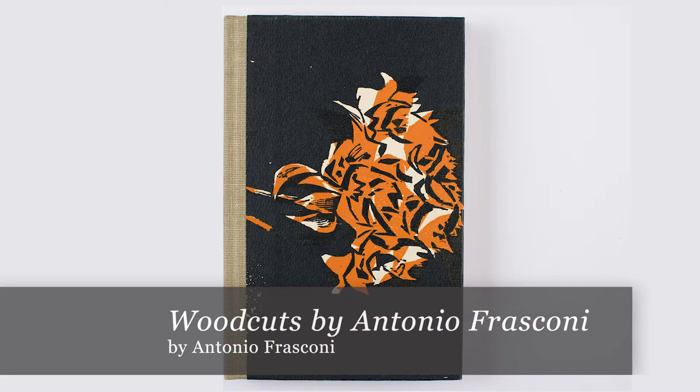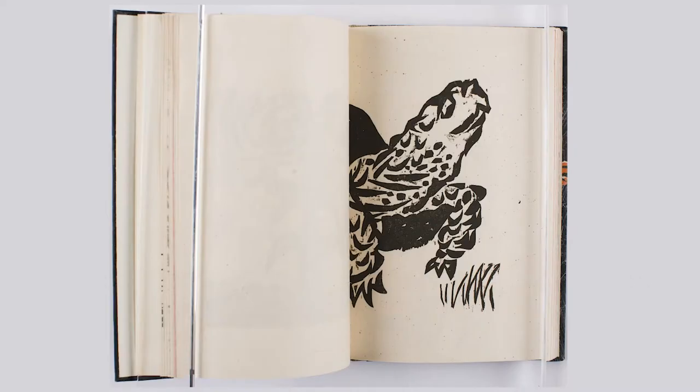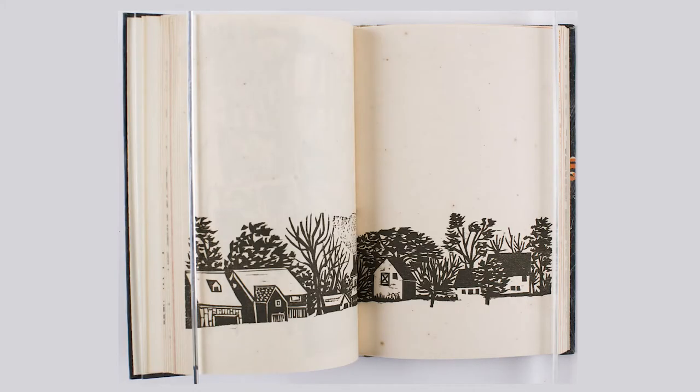In this book, titled Woodcuts by Antonio Frasconi, the artist uses only images. Let's scroll through a few pages from the book. What do you notice as you look at the illustrations in the book? What are some ways that you would like to tell your story?